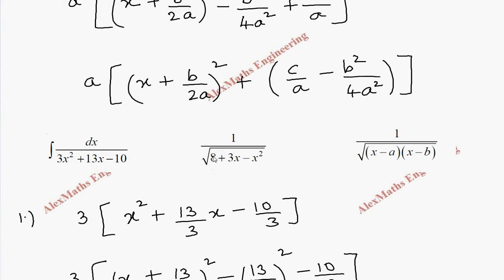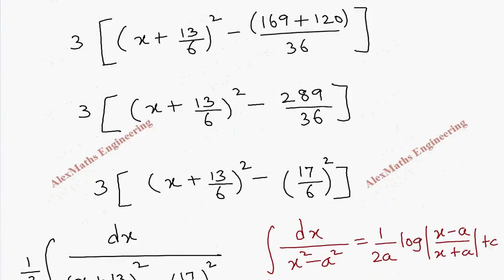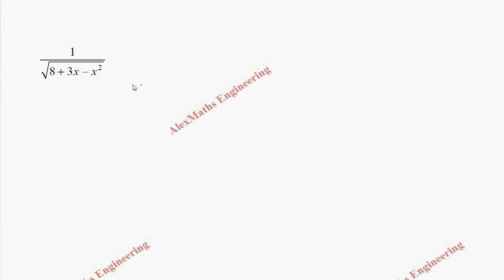Coming to the next problem, the denominator has a square root inside which contains the quadratic expression. As per the procedure, we take the quadratic expression and do completing the square. We rearrange: −x² + 3x + 8, and take the coefficient of x² common, so −1 is taken common giving −(x² − 3x − 8).